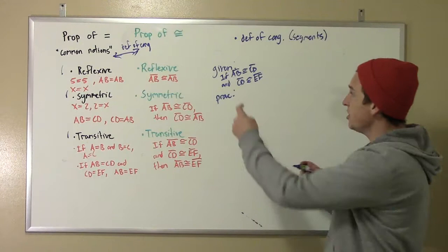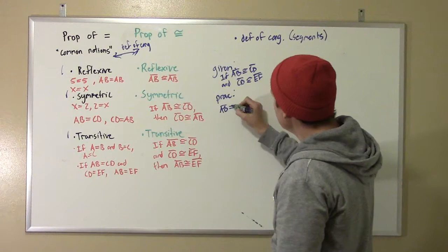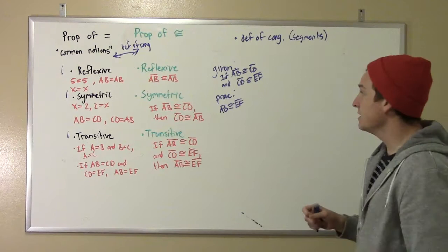That's the given statement. What we want to show is that first segment must be congruent to that third segment. AB is congruent to EF. We want to be able to skip over that middle guy. Okay, so that's what we're going to do.